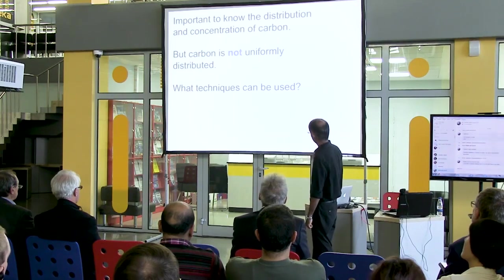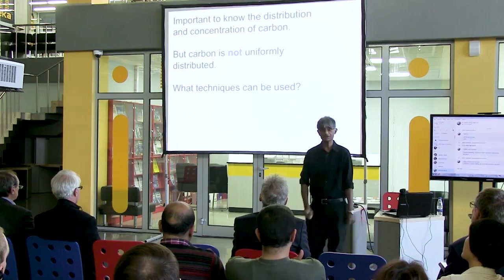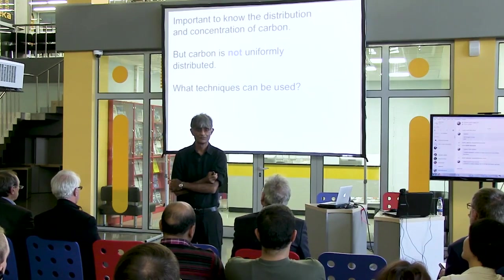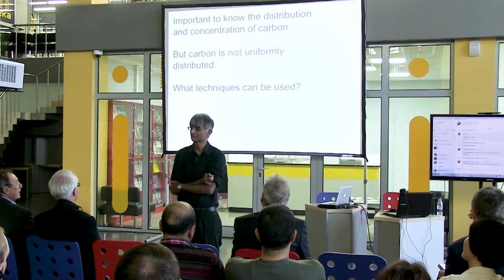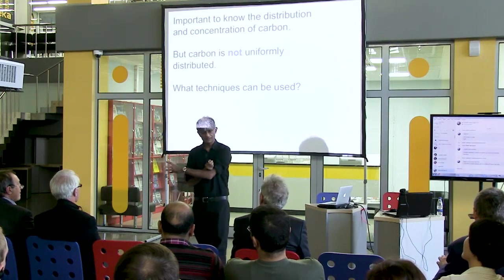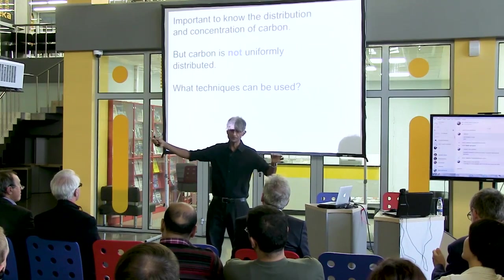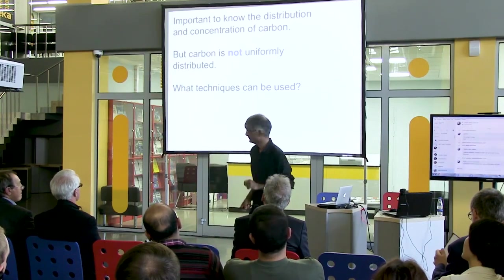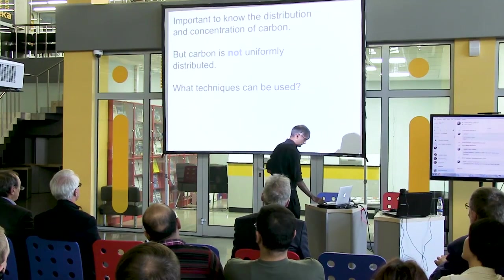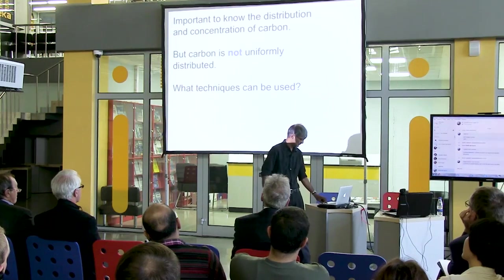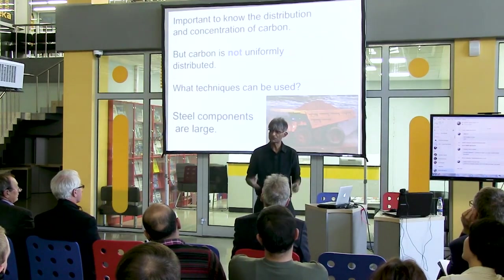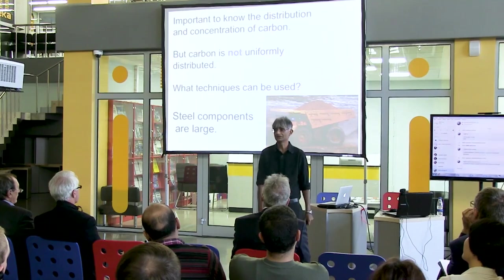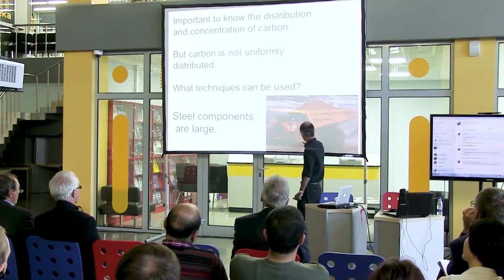Температура примерно соответствует комнатной — это как раз переход с очень хрупкого состояния в пластическое. Ещё раз: неравномерное распределение углерода. Мы должны знать, каким образом распределяются атомы углерода. Какие методы можно использовать, чтобы измерить концентрацию атомов углерода в стали локально? Можно использовать атомный зонд или смотреть, сколько атомов требуется, чтобы попасть из точки A в точку B, и оценить, что там будет: кремний, железо и так далее.